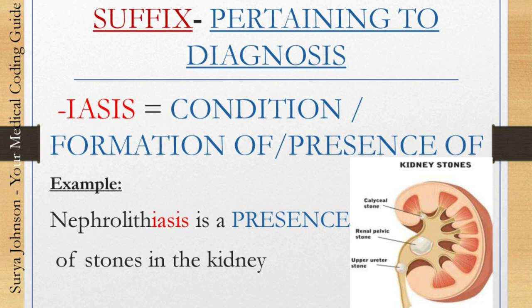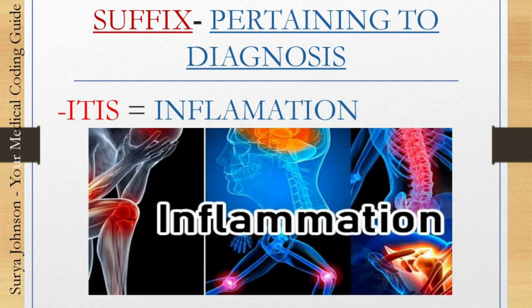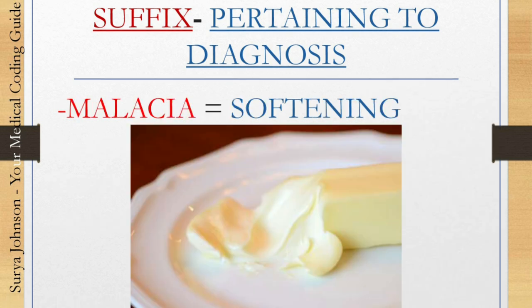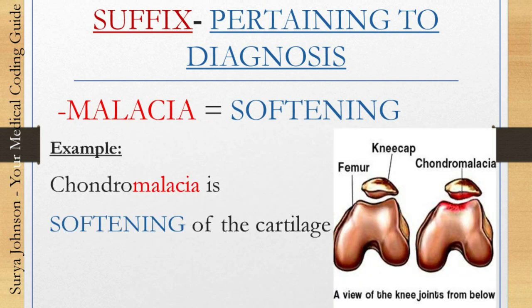Next, the suffix '-itis' pertaining to diagnosis means inflammation. For example, encephalitis is the inflammation of the brain. The next one is '-malacia,' which means softening. For example, chondromalacia means softening of the cartilage. The next one is '-megaly.'